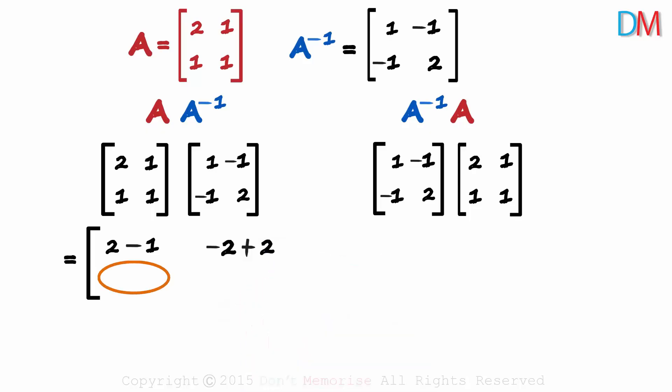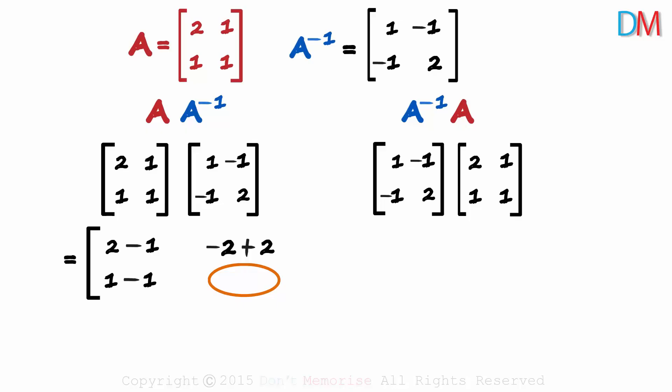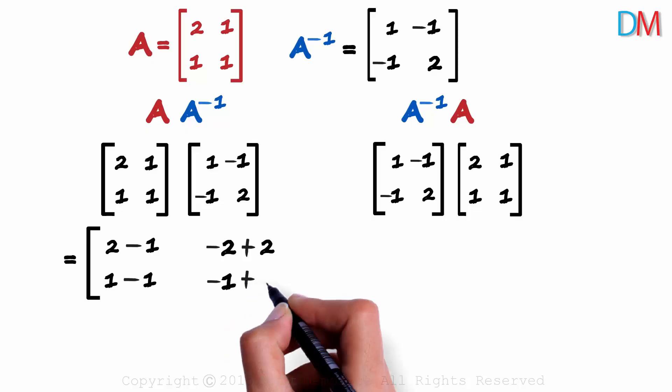For the 2 1th element, we multiply the second row with the first column. 1 multiplied by 1 plus 1 multiplied by minus 1. That will give us 1 minus 1. And for the last element, we multiply the second row with the second column. 1 multiplied by minus 1 plus 1 multiplied by 2. Minus 1 plus 2.